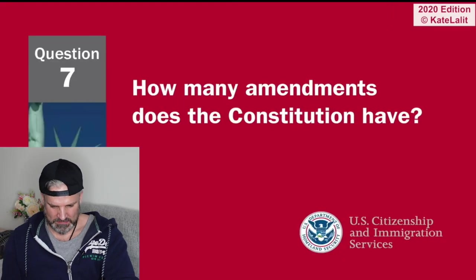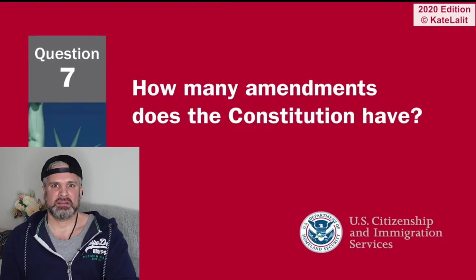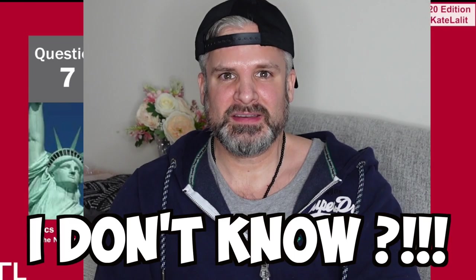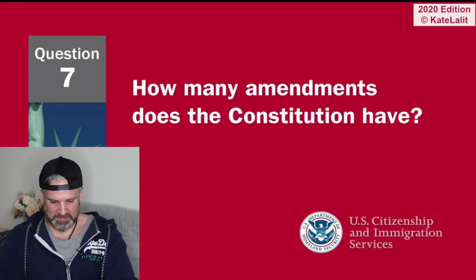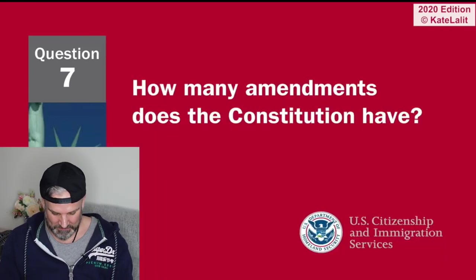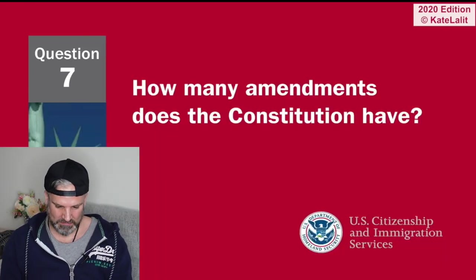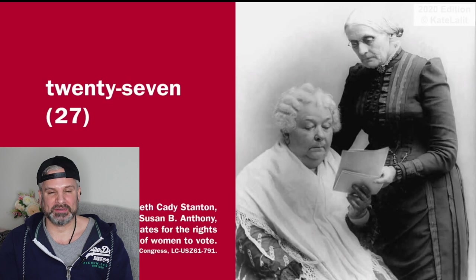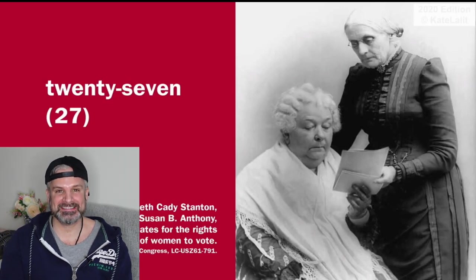How many amendments does the Constitution have? I don't know, no idea... 37? Oh, 27. Close — it's 27.